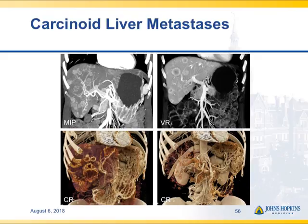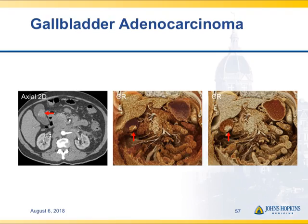In this gallbladder cancer, you can see the mass in the axial views and the extensive nodes present. But then on the cinematic, it very nicely shows you the puckering along the wall of the gallbladder, and the extensive adenopathy in the periportal and peripancreatic region.